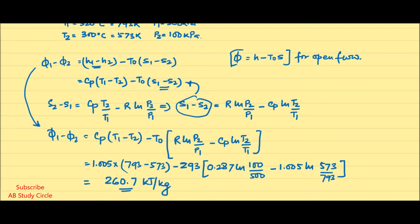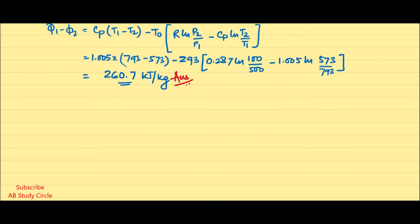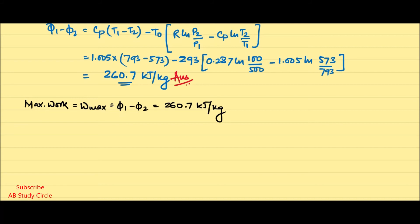Solving this gives 260.7 kilojoule per kg, which is the change in availability — the answer to the first part of the question. For the second part, the maximum work for a flow process equals the change in availability, φ1 minus φ2, which is also 260.7 kilojoule per kg.